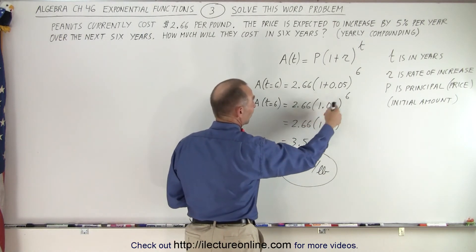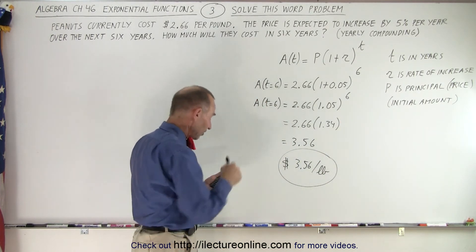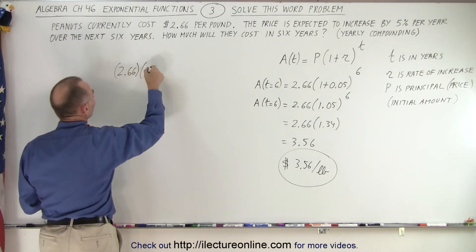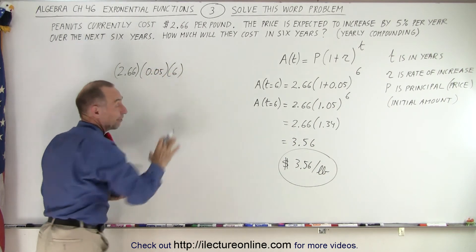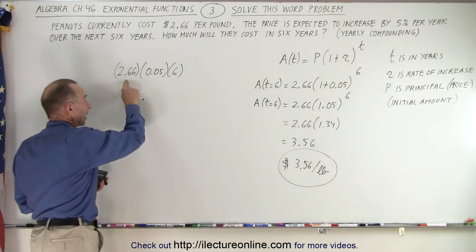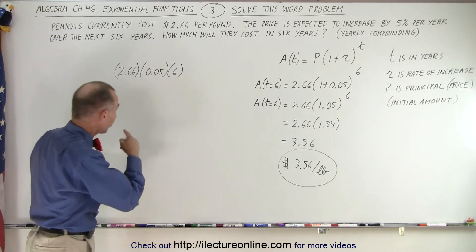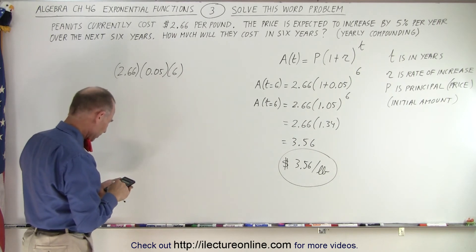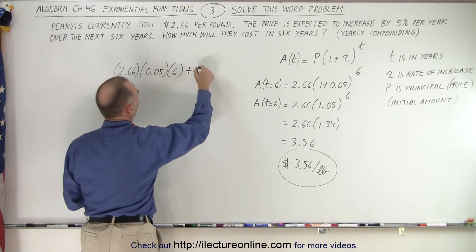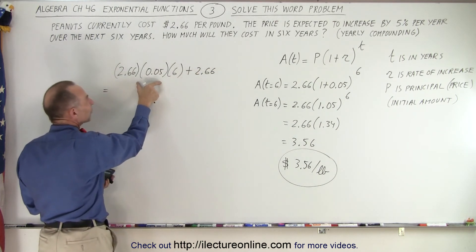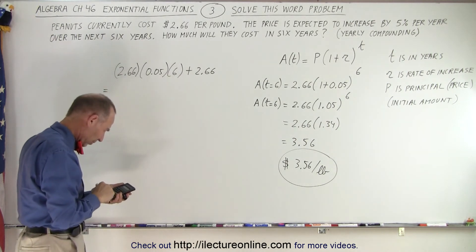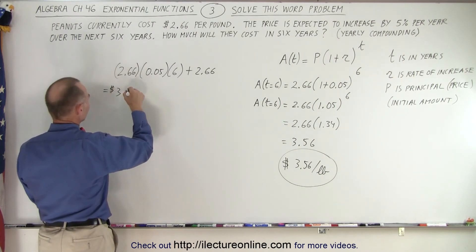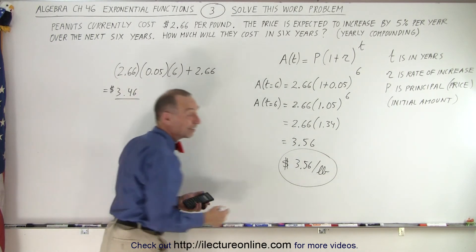Notice how that differs from simply taking 5% for six years — that would be 30%. If you increase $2.66 by 30% all at once, you calculate 2.66 times 0.05 times 6, but you also have to add the original amount back, so plus 2.66. That gives you $3.46 — which is not the same amount we got with compounding.